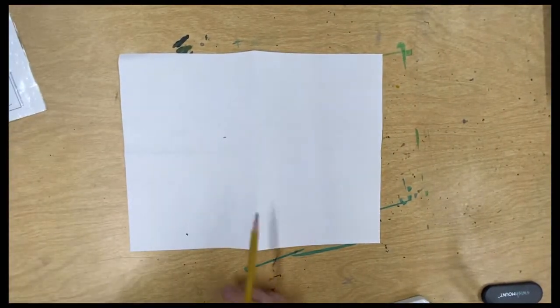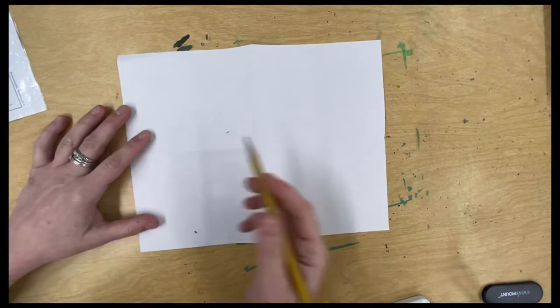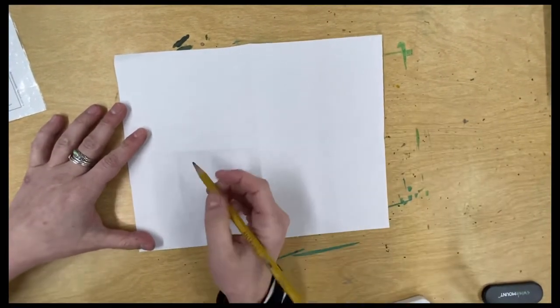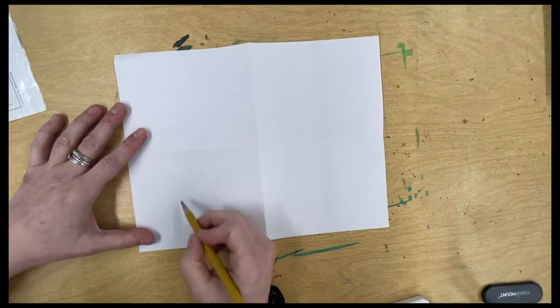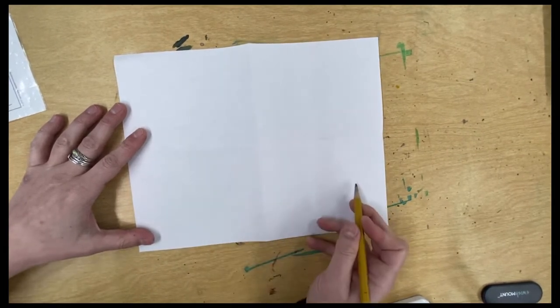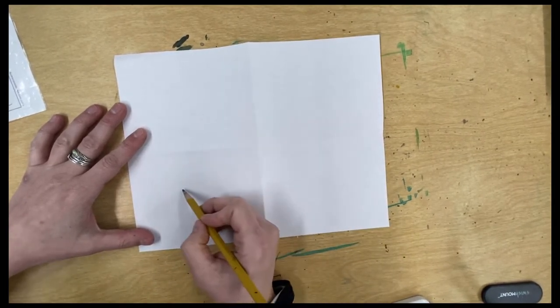Orca just looks like a big old fish. So we're going to make his body shape first. It's going to be skinnier at this end and then wider at the other end. So let's start by making an arch.